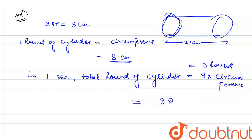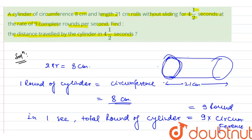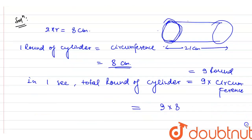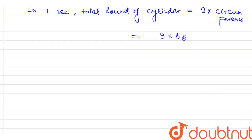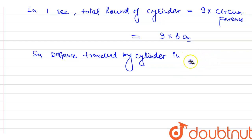So 9 into 8 gives the distance covered in one second. Now we have to find the distance traveled by the cylinder in 4 and half seconds. Four and half seconds can be written as 9 by 2 seconds. So distance in 4 and half seconds equals 9 by 2 into 9 into 8.